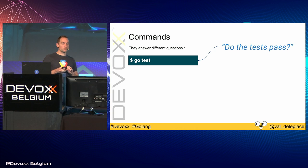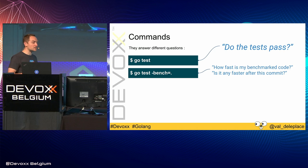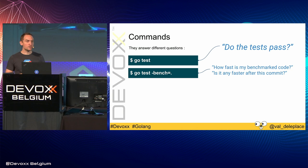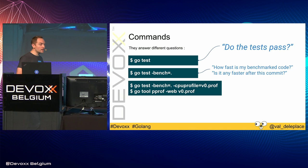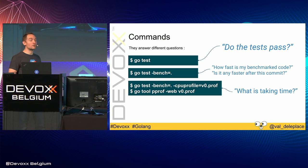Some commands answer different questions. 'go test' tells me if my tests pass. 'go test -bench=.' tells me how fast my benchmarked code is, and whether it's any faster after a commit. 'go test -cpuprofile' gives me a PPROF profile — have you heard of PPROF? It's a profiler, really really great. It answers: what is taking time in my program? And we also have an execution tracer with '-trace', which answers: what are my processors doing, and do I have some contention?